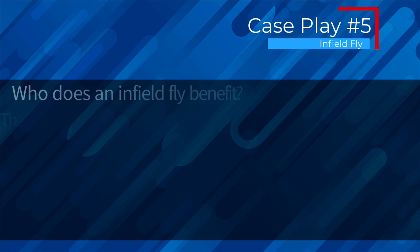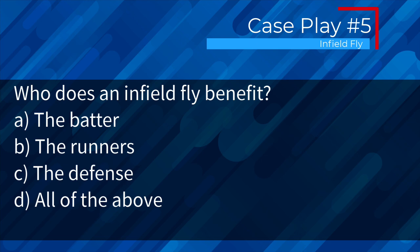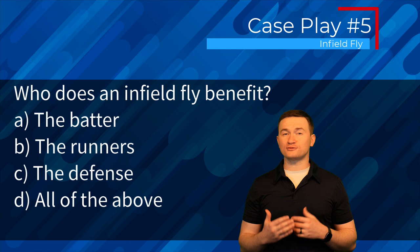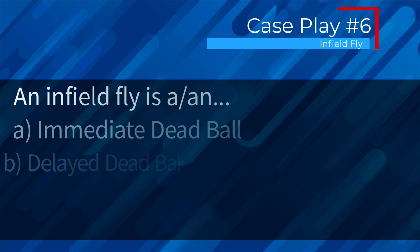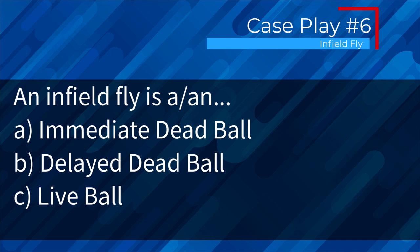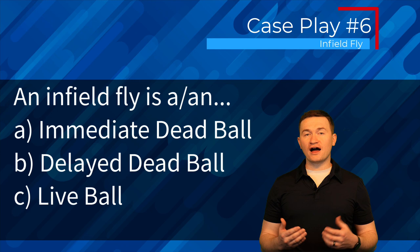Case play five: who does an infield fly benefit — the batter, the runners, the defense, or all of the above? The correct answer is the runners. The rule specifically states that runners are who's benefited by the call. Case play six: is an infield fly an immediate dead ball, a delayed dead ball, or a live ball? The correct answer is C — an infield fly is a live ball.